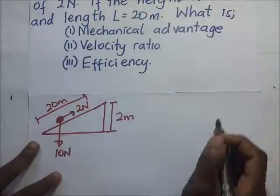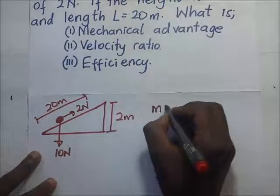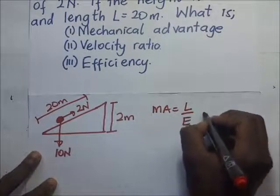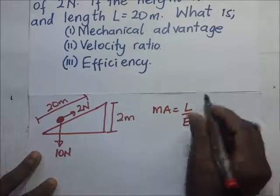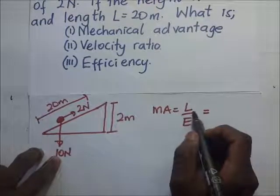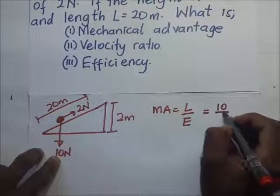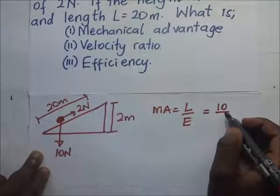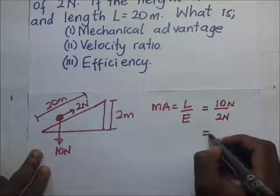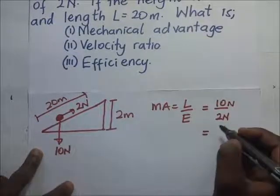What is the mechanical advantage? The mechanical advantage is equal to load over effort. The load is 10 newtons divided by the effort of 2 newtons. Therefore, the mechanical advantage is 5.